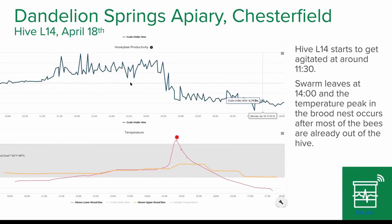Here is another hive where we have high-resolution data, where we ran the scale at minute intervals to really get a better feel for how this timing thing works. What we see is the hive gets agitated around 11 or 11:30 — the weight starts to rumble, going up and down — and then they leave at about two o'clock. The temperature peak is clearly after they've left the hive. So this theory about them potentially warming up the flight muscles is becoming thinner and thinner.